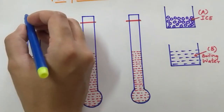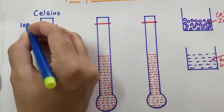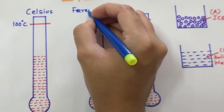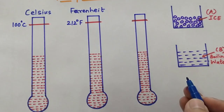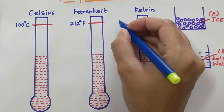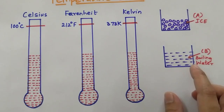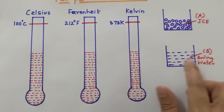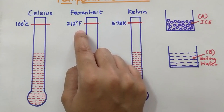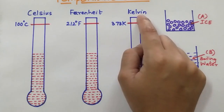Now the degree Celsius scale considers this particular point as 100 degree Celsius, the Fahrenheit scale considers this point as 212 degree Fahrenheit, and the Kelvin scale assumes this particular point to be 373 Kelvin. In short, water boils at 100 degree Celsius, 212 degree Fahrenheit, and 373 Kelvin.